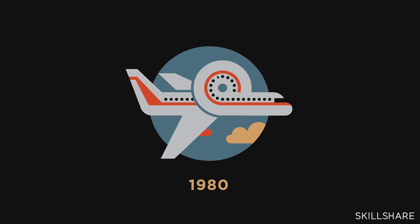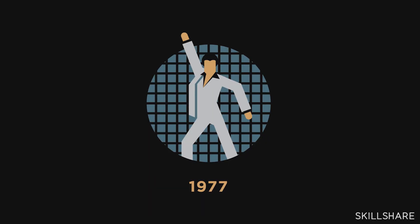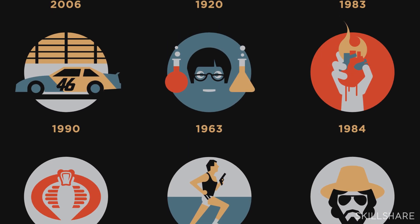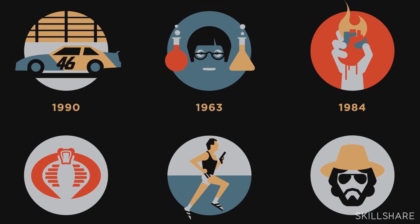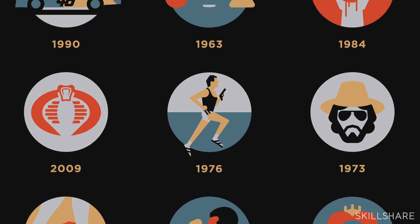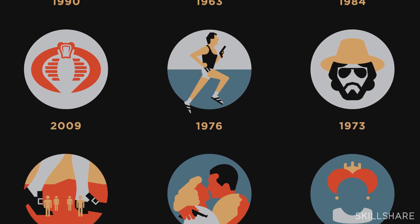In thinking about icon design, it's important to think about both the icons standing on their own as one cohesive design, but also thinking about them in terms of the series — making sure that things like style and color really feel cohesive as far as the whole thing being a set.